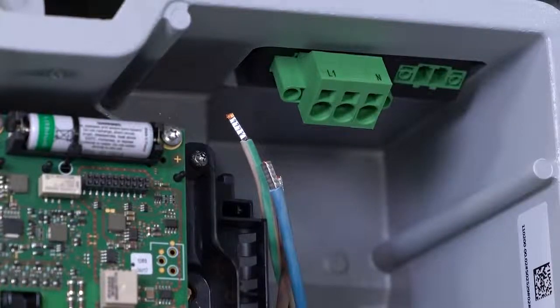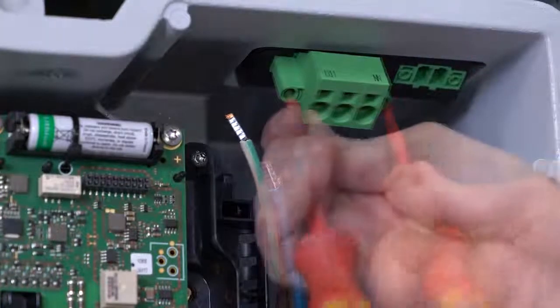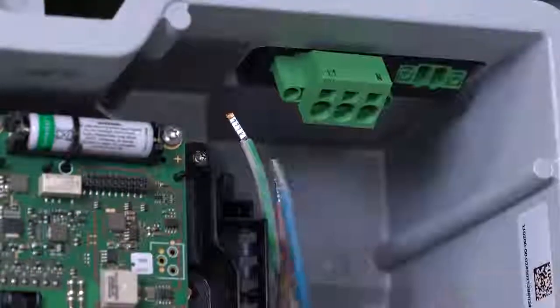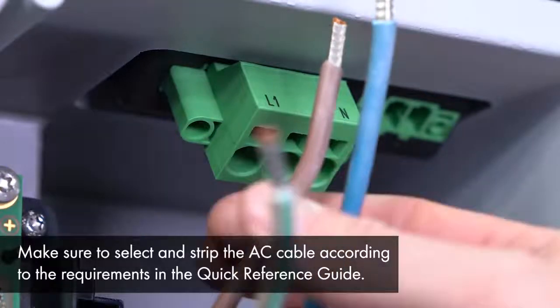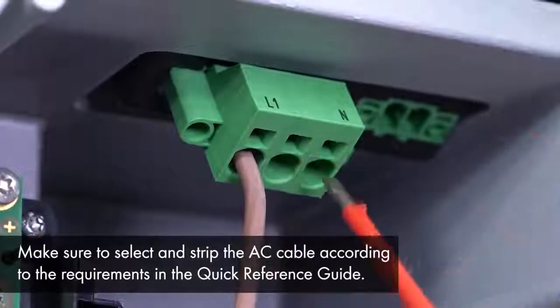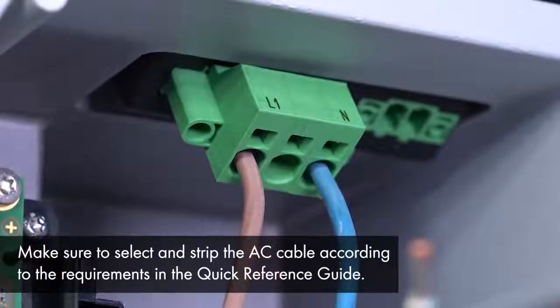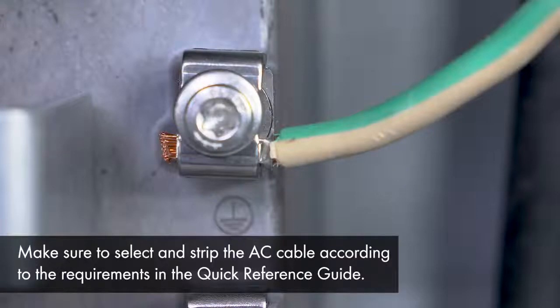It should then be tightened with a 3.5 mm flathead screwdriver. Now, connect the two AC cables, phase and neutral, to the AC plug. As you can see, the flathead screwdriver comes in very handy for this also. The grounding cable must be connected separately to an equipment grounding terminal between the washer and the clamping bracket. Then, tighten the screw with a torque screwdriver TX25.